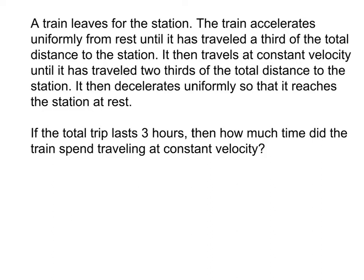A train leaves for the station. The train accelerates uniformly from rest until it has traveled a third of the total distance to the station. It then travels at constant velocity until it has traveled two-thirds of the total distance to the station. It then decelerates uniformly so that it reaches the station at rest.